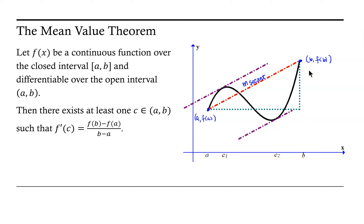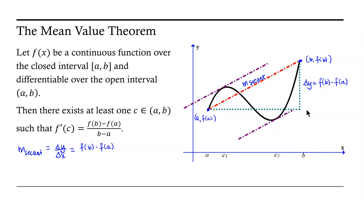What is that slope? The slope of the secant line is the vertical change, or change in y, over the change in x. We have a vertical dotted line in green representing our change in y. This vertical line starts at f at a and goes up to f of b, so our change in y is f at b minus f at a. The horizontal line represents our change in x, and our x values go from a to b, so our change in x is b minus a.